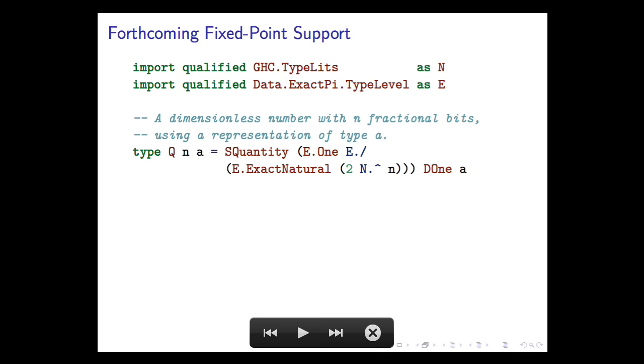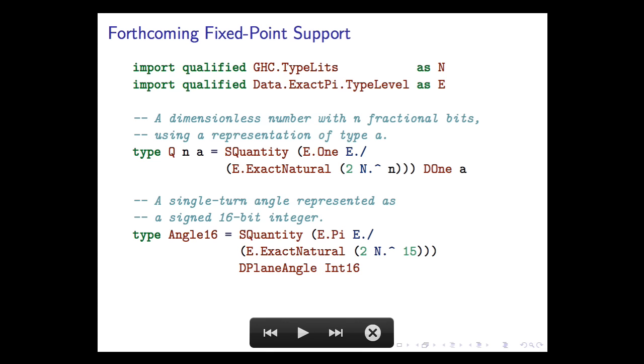So for example, this would be Q15 and 16 would be the type of dimensionless numbers that are stored as themselves divided by 2 to the 15th. So numbers from negative 1 to positive almost 1. This would be angles split where the whole circle is split into 2 to the 16th segments. So you could have an integer sine function that went from one of these types to the other and everything would be checked.